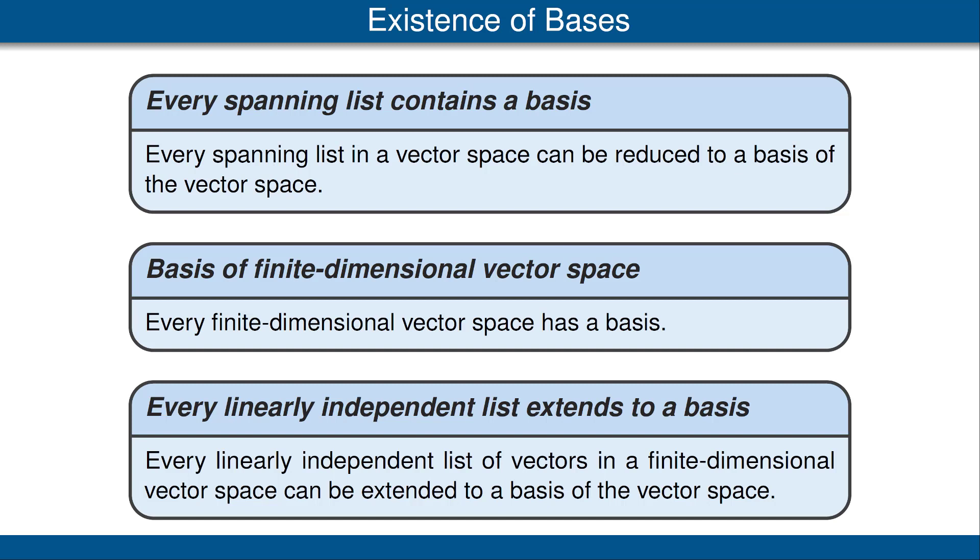Now we come to the third important result in this video. This result says that if we're working in a finite dimensional vector space and we have a linearly independent list of vectors in that vector space, then we can add some more vectors to that list so that we end up with a basis. Be sure to read the proof in the book of this interesting and important theorem.